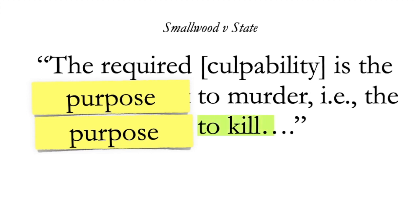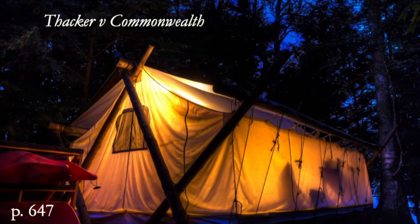The ERP opinion cited by the court also rather casually states that the result element is to murder, which could confuse the jury. Consider the case of Thacker v. Commonwealth. In Thacker, the male defendant made advances to the victim. She rebuffed them. Angered, the defendant walked away from her tent, turned, and fired a shot at the light inside. The shot left the victim uninjured.